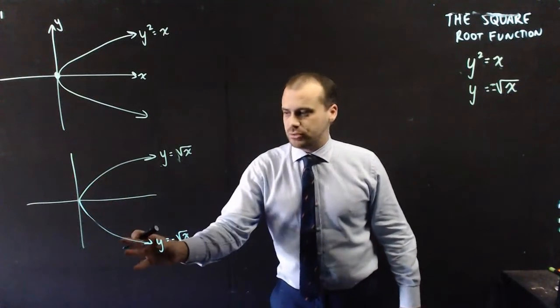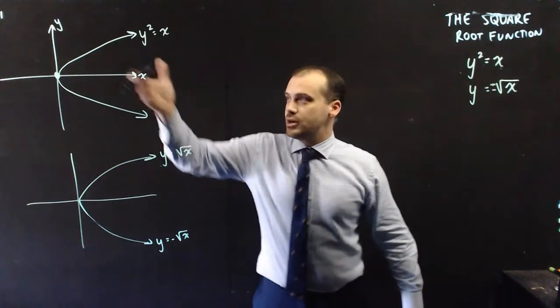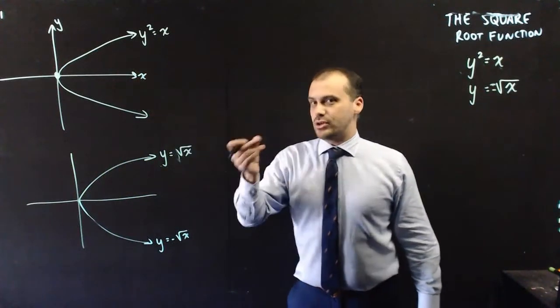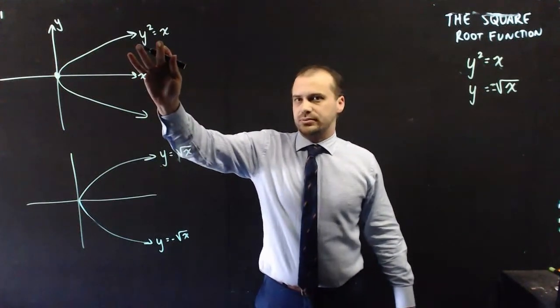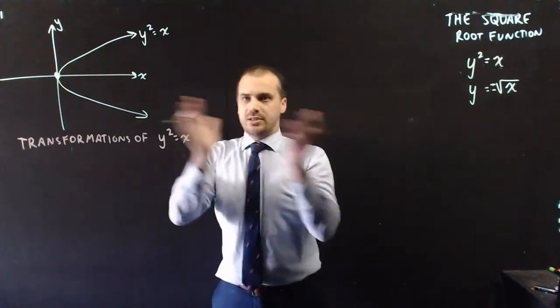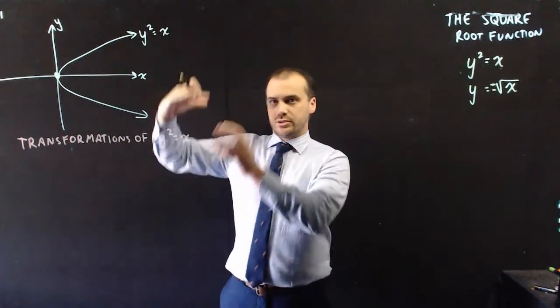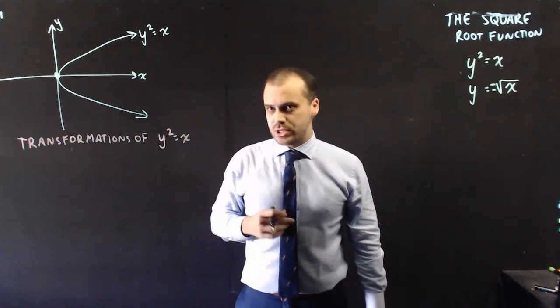This is a function because it passes the vertical line test. This is a function because it passes the vertical line test. But that one there is not a function. Now, let's look at this one a little bit further. So we're going to be doing transformations of y squared equals x. We're going to push it up and down, left and right. We're going to dilate it in some ways.